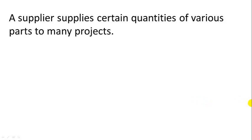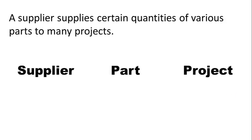That completes our discussion of unary relationships. Now let's look at another example: a supplier supplies certain quantities of various parts to many projects. A supplier looks like an entity type, quantity looks like an attribute, parts looks like an entity type, and projects is another entity type. So we are really seeing three different entity types: supplier, part, and project.